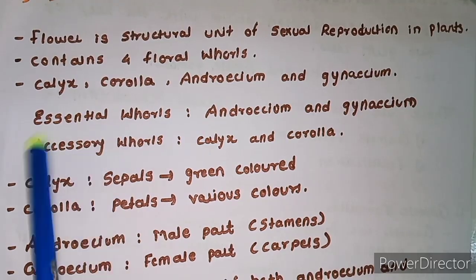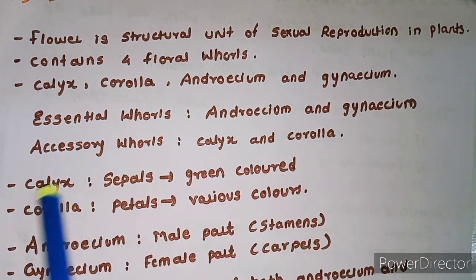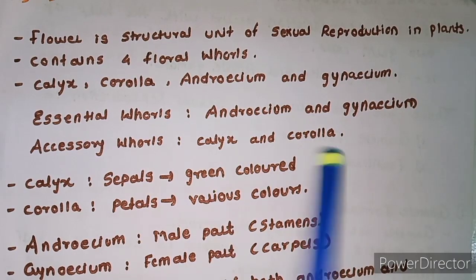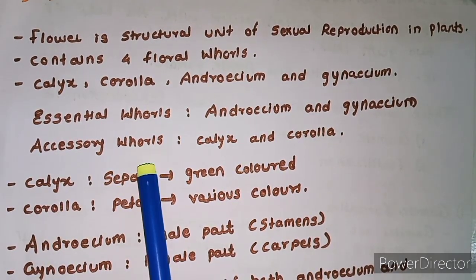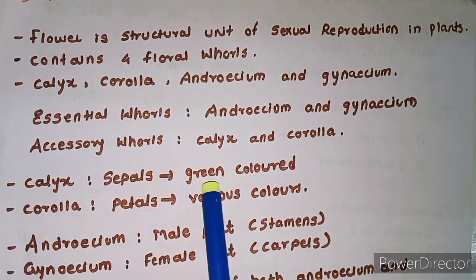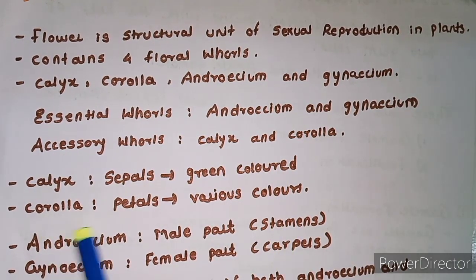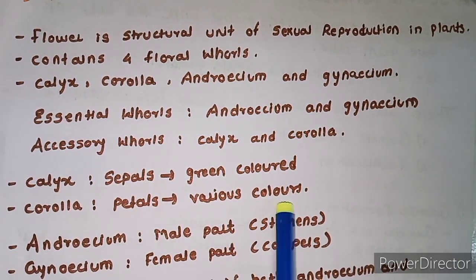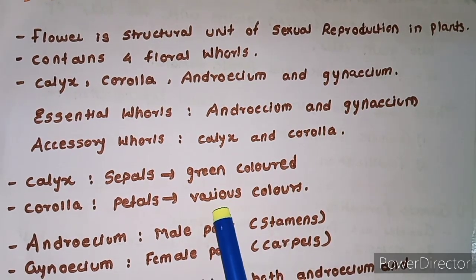Calyx consists of sepals, which are green colored. Corolla consists of petals, which are variously colored — red, pink, yellow, etc. Androecium is the male part of the flower. A flower has both male and female parts.